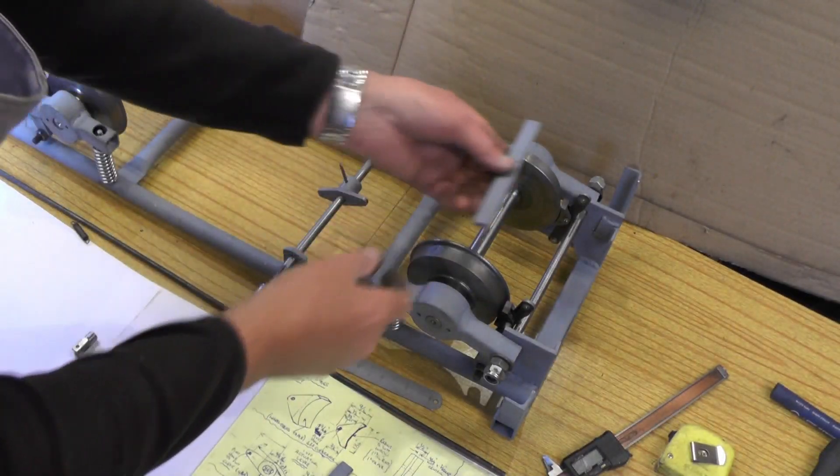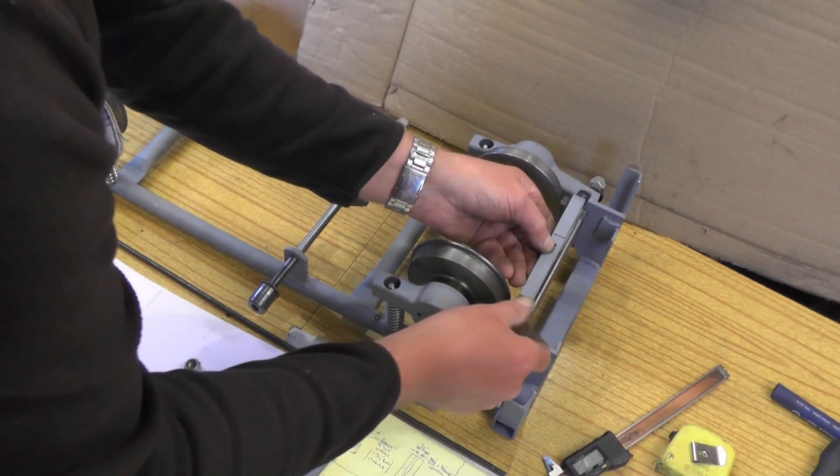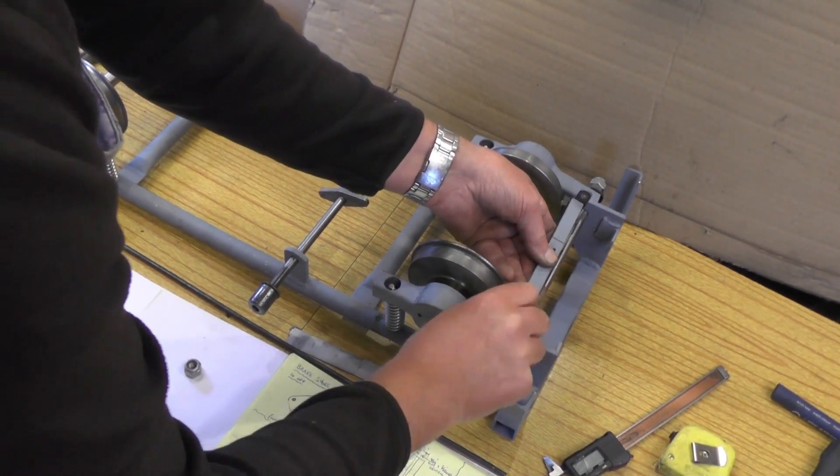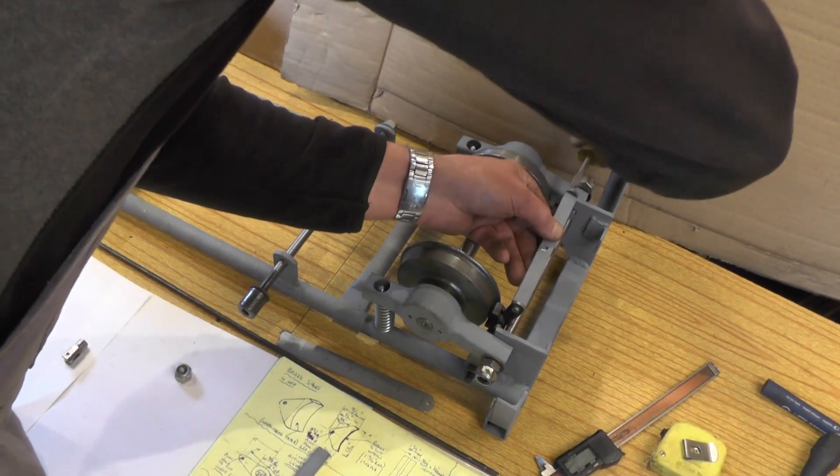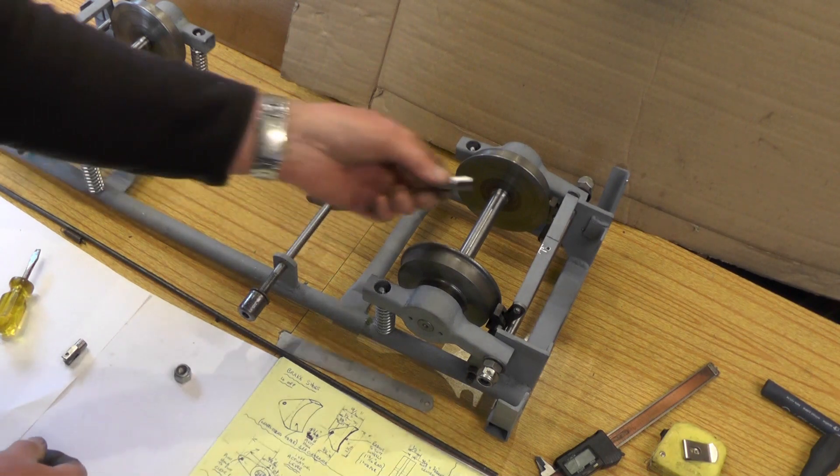I've turned it over now and I'm going to put the equalizing bar on. Now we need the clevis to fit into the bar.